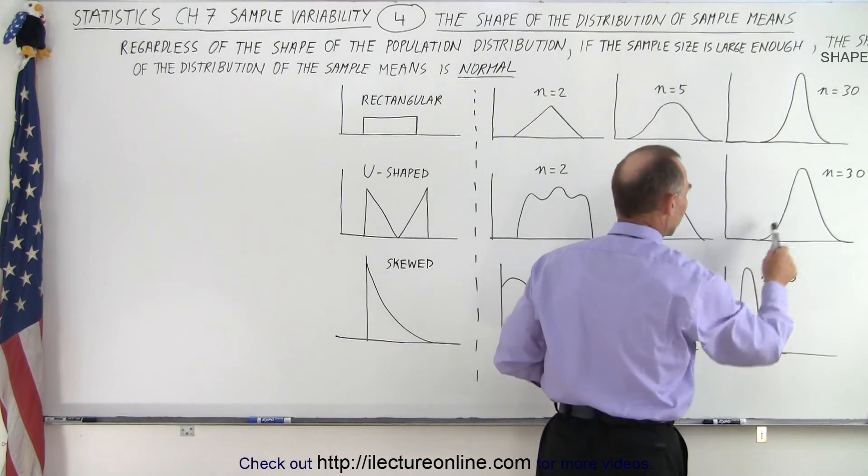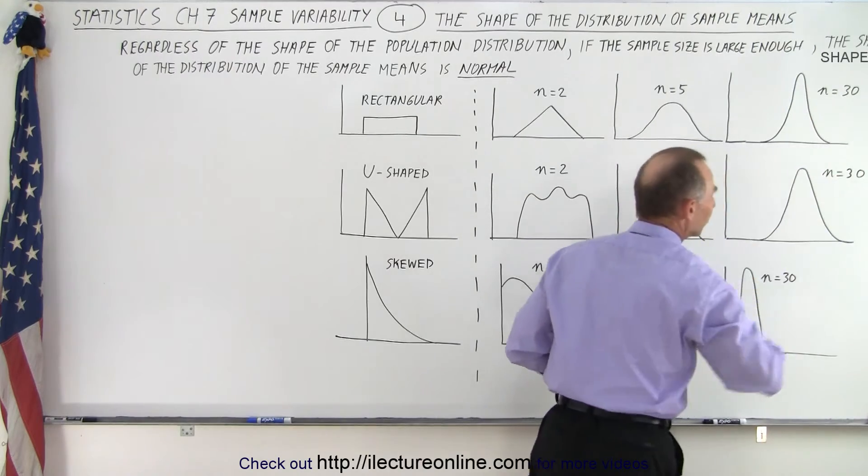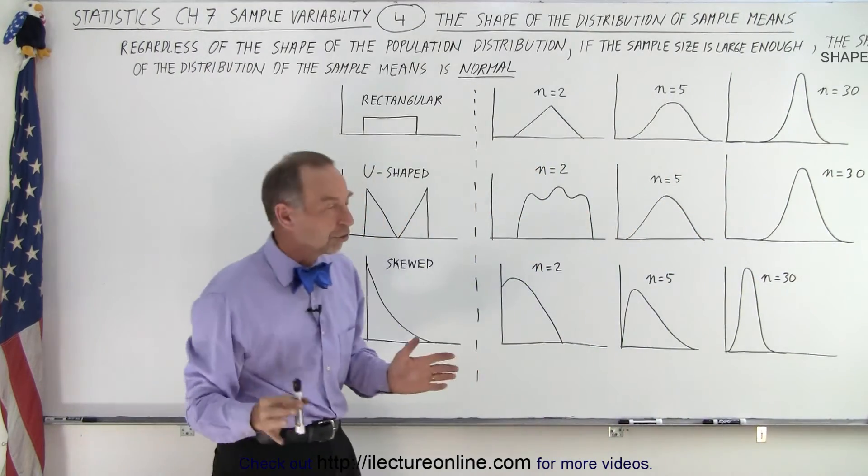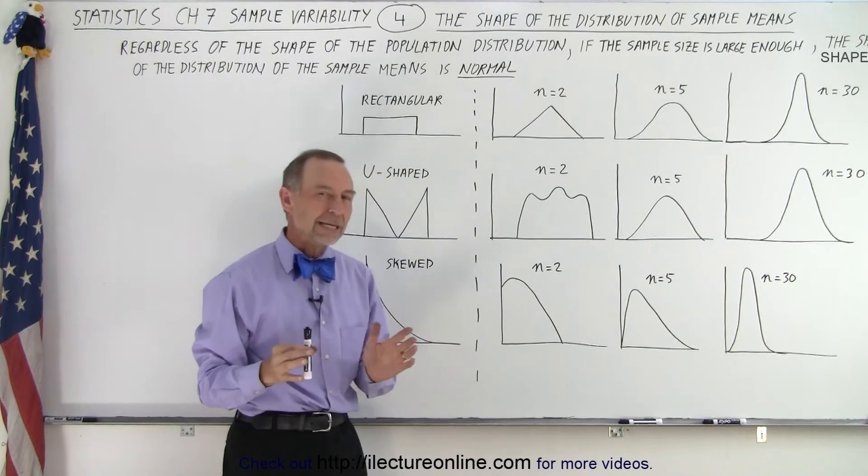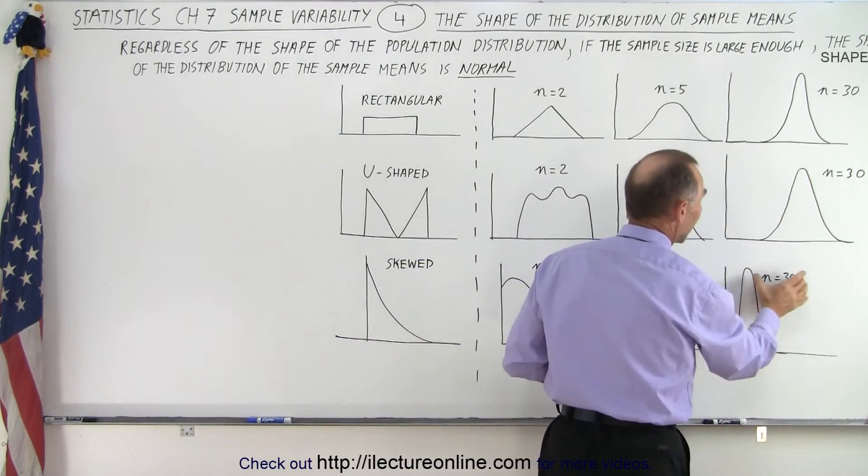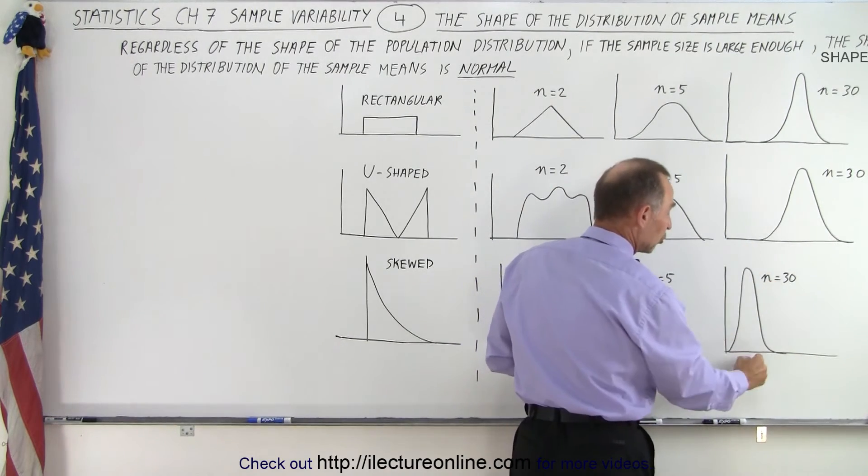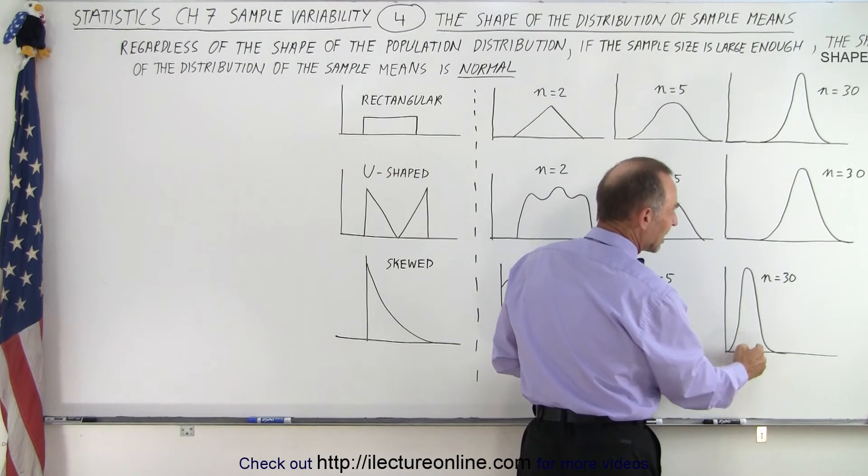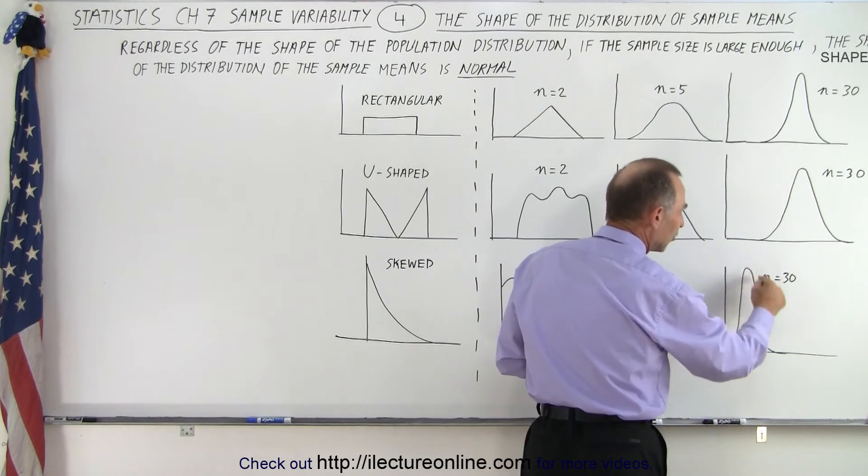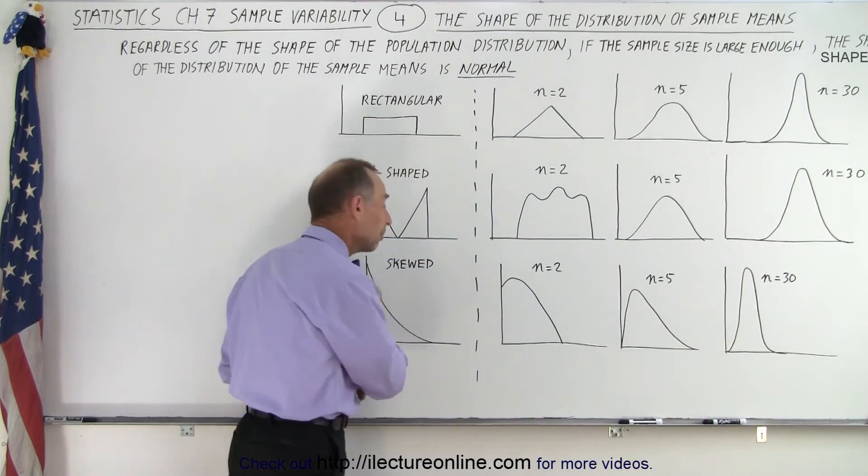So all of these are very nicely well-defined normal distributions, as long as the sample size of the samples we use is large enough, it always ends up being a normal distribution. And then, of course, the means of that, if the sample size is large enough and you have enough samples to make a distribution, then you'll find that the average of the distribution of the means will equal the average of the mean of the population.